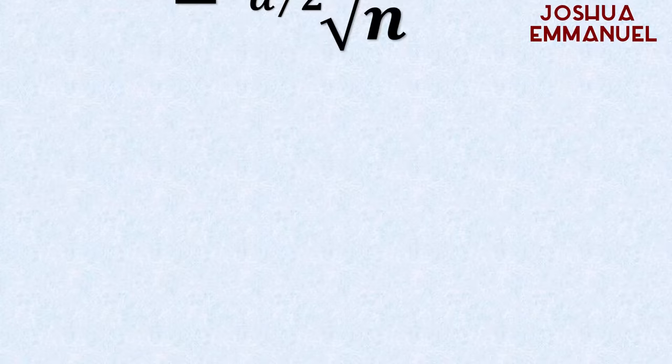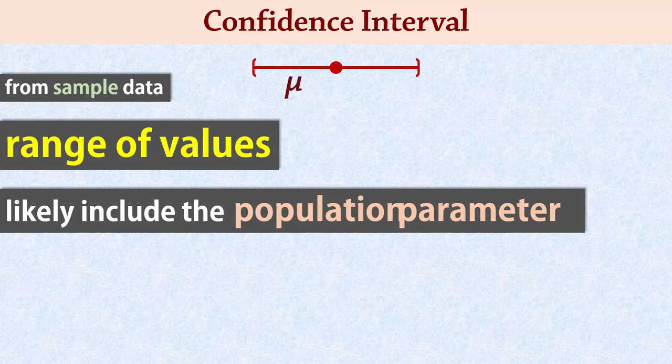A confidence interval constructed from sample data is a range of values that is likely to include the population parameter at some specified confidence level.